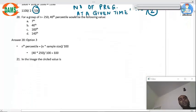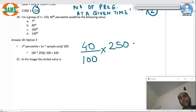Question 20: For a group of 250 people, the 40th percentile is very simple. It is the 40th percent of 250, so the value will be 100th.